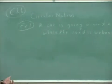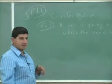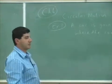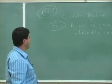We'll first do an example where the road is unbanked. So the turn that the car is making is on a flat road, and the radius of the circle that the car is making is 80 feet.